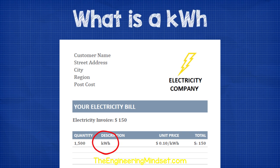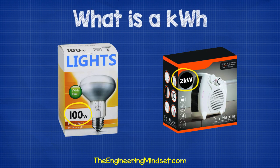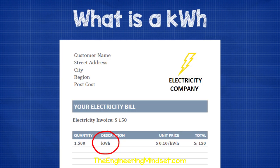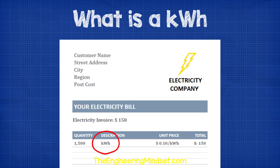This is how much power was demanded over an amount of time. Power multiplied by time equals energy. So let's quickly look at what a kilowatt is, and then we'll come back to kilowatt hours with some calculations, and this will make things a lot easier.